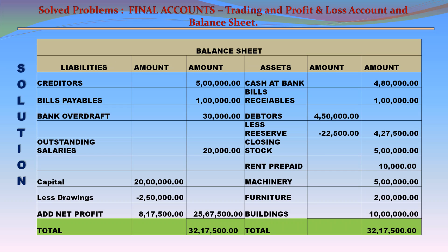Balance Sheet. On the asset side: cash at bank 4,80,000; bills receivable 1,00,000; debtors 4,50,000 less reserve 22,500 equals net debtors 4,27,500; closing stock 5,00,000; rent prepaid 10,000; machinery 5,00,000; furniture 2,00,000; buildings 10,00,000. Total assets: 32,17,500. On the liability side: creditors 5,00,000; bills payable 1,00,000; bank overdraft 30,000; outstanding salaries 20,000; capital 20,00,000 less drawings 2,50,000 plus net profit 8,17,500 equals total capital 25,67,500. Total liabilities: 32,17,500. Total assets: 32,17,500.